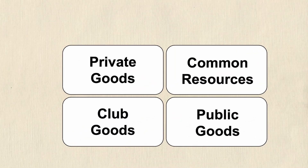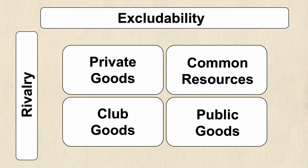There are four types of economic goods and these are classified by two criteria: excludability and rivalry. Excludability means that there's a way to prevent others from using a good or service, and normally this is by charging some amount of money for it. Rivalry on the other hand means that one person consuming a good or service prevents another person from consuming the same good or service.